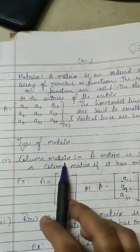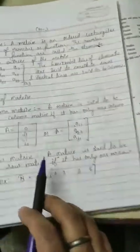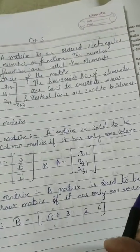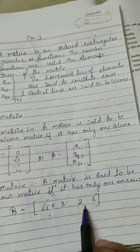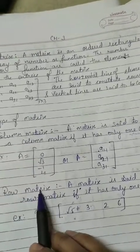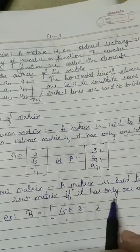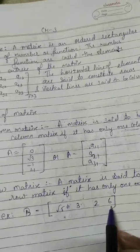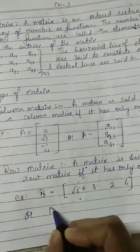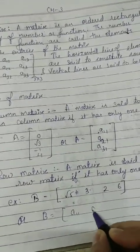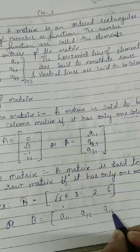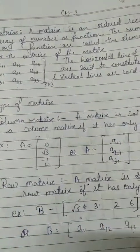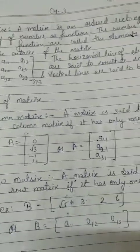Now moving on to the row matrix. A matrix is said to be a row matrix if it has only one row — all elements are given in one row only. For example, B equals the matrix containing root 5, 3, 2, 6 — this is a row matrix. Or you can write B equals a11, a12, a13. A matrix is said to be a row matrix if it has only one row.